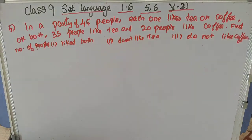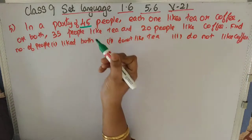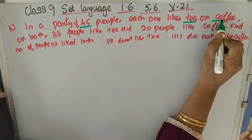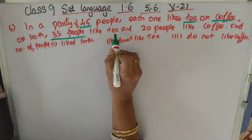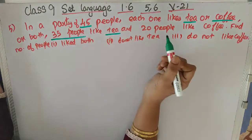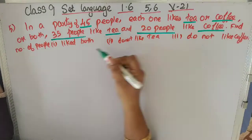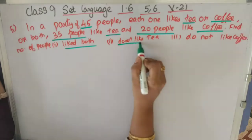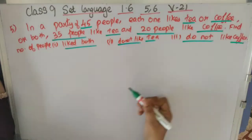Problem number 5 is: in a party of 45 people, each one likes tea or coffee. 35 people like tea, 20 people like coffee. We have to find the number of people who liked both, who do not like tea, and who do not like coffee.